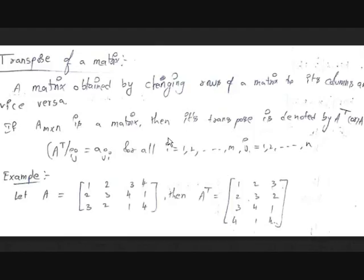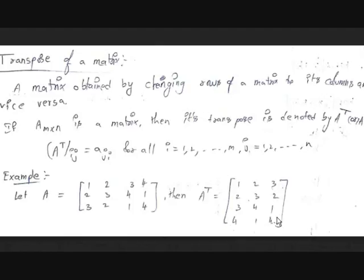Let's take an example. Let matrix A be the 3×4 matrix with rows: 1, 2, 3, 4; then 2, 3, 4, 1; and 3, 2, 1, 4. Its transpose is found by writing each row as a column. The first row 1, 2, 3, 4 becomes the first column top to bottom. The second row 2, 3, 4, 1 becomes the second column. And the third row 3, 2, 1, 4 becomes the third column. So this is the transpose of the matrix.